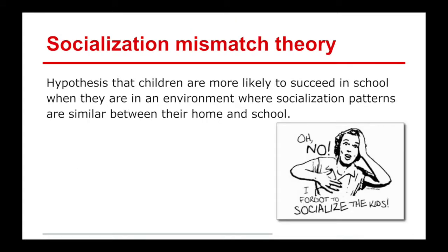Socialization mismatch theory, discussed in Otto, holds that when children have a socialization pattern similar between home and school, they can be successful. But if there's a challenge or disagreement in that socialization pattern, children might struggle. For example, if a child is at home where they are empowered and asked to speak up, and then they go to school and are asked to zip their lips, there are going to be challenges. The hypothesis is that socialization patterns need to be similar or mimic one another for students to succeed.